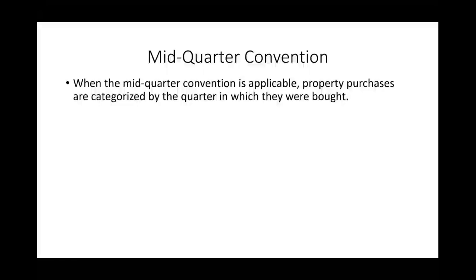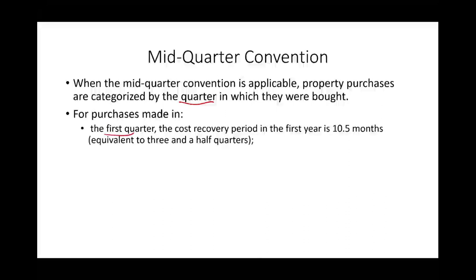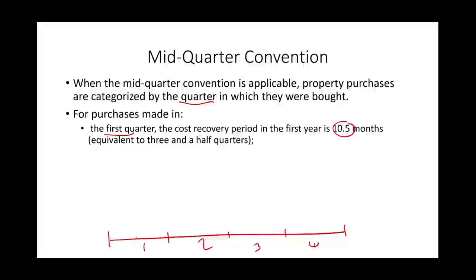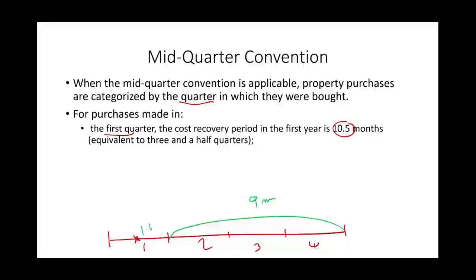The mid-quarter convention is applicable when you purchase a vast majority of your assets in the fourth quarter. Assets are then categorized by quarter and treated as purchased in the middle of that quarter. For example, for assets placed in the first quarter, the cost recovery period is 10.5 months — that's three remaining quarters (nine months) plus 1.5 months, totaling 10.5 months, equivalent to three and a half quarters.